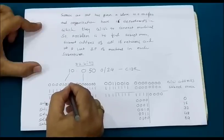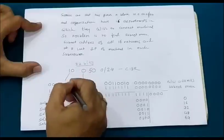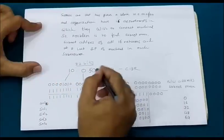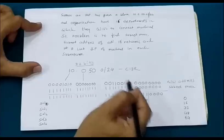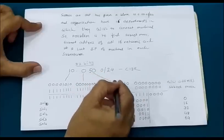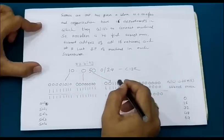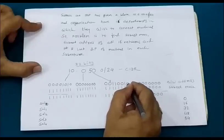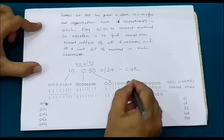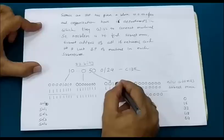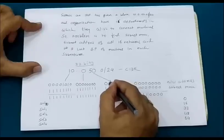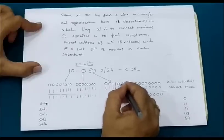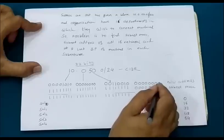8 plus 2 makes 10, so this is how I have written 10 in binary. This is 0 in binary, and this is 50 in binary. To represent 50: 32 is 1, 16 is 1, 2 is 1, and the rest of the bits are 0. You know: 1, 2, 4, 8, 16, 32, 64, and 128 — that's how you write 50.